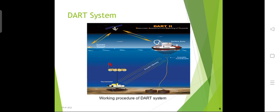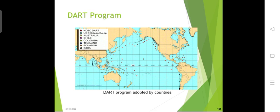And here is the DART program. The DART program is designed to sense pressure changes at the bottom of the ocean caused by a passing tsunami and to communicate these changes to the tsunami warning centers. It was developed by PMEL and has been adopted by many countries, including India, Colombia, Thailand, Australia, Chile, and the U.S.